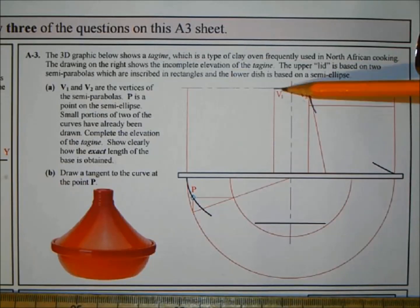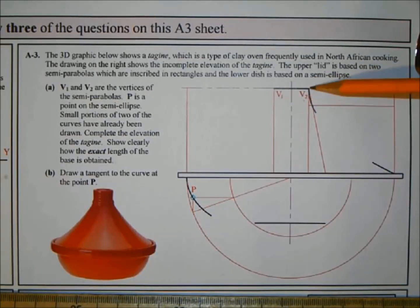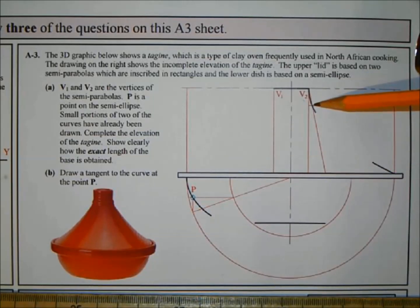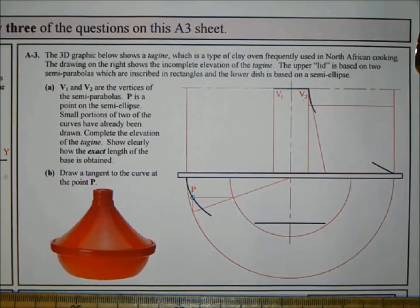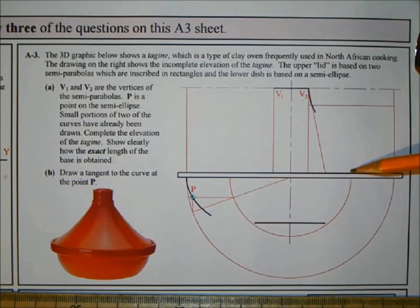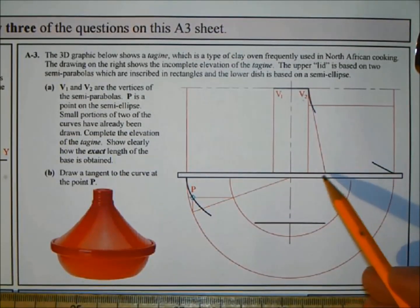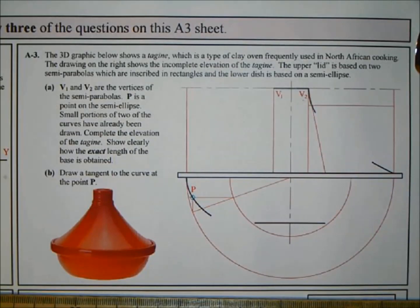They've given you the vertices V1 and V2, so that's where your parabola is starting. They've also shown you basically how to do the parabola. They've given you a horizontal line here and your angle line up to the vertices, and where they meet gives you a point on the parabola. If a parabola is inscribed in a rectangle, the first thing you need to do is divide up the height and the length into an even number of parts. They've started that for you.